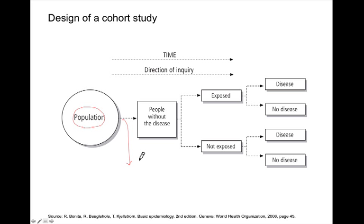We can, in fact, look at more than one exposure, although typically we focus on one. Then over time, we follow the group and determine whether or not those who were exposed to a particular factor developed disease versus those who were not exposed. We can calculate an incidence of disease in both groups and then a relative risk to compare the two groups.